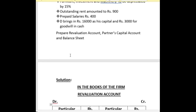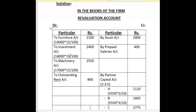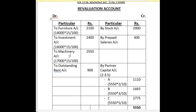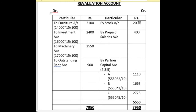In the books of the firm, revaluation account: stock is increased by Rs. 2,000, so we write on the credit side of revaluation account 'by stock account 2,000'. The value of furniture, investment and machinery is decreased by 15%. So 15% of 14,000 is Rs. 2,100 — debit side. 15% of 16,000 is Rs. 2,400 — again debit side. And 15% of 17,000 is Rs. 2,550 — debit side.